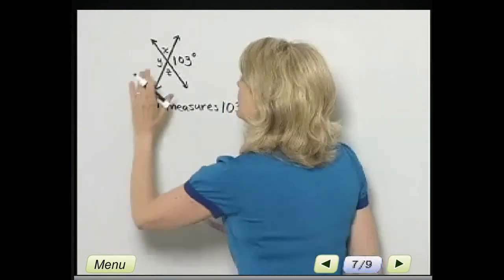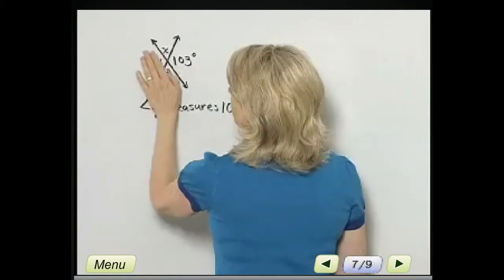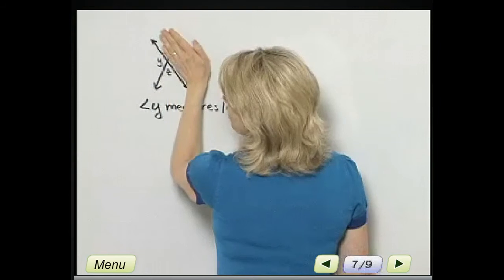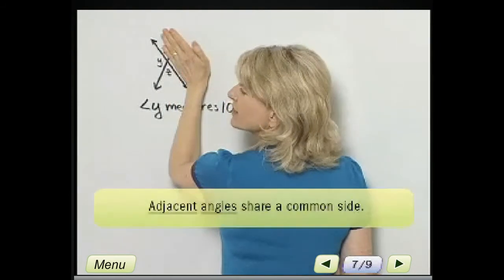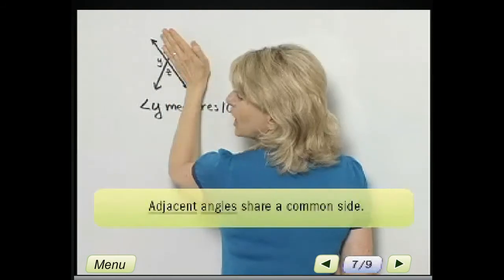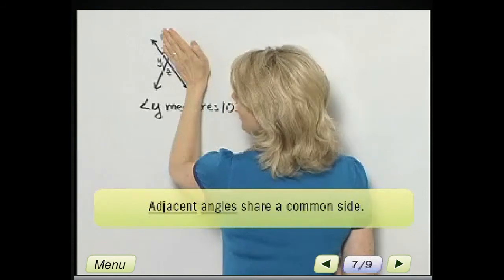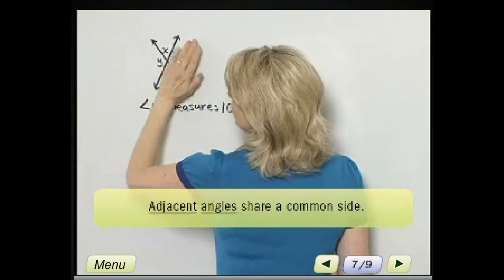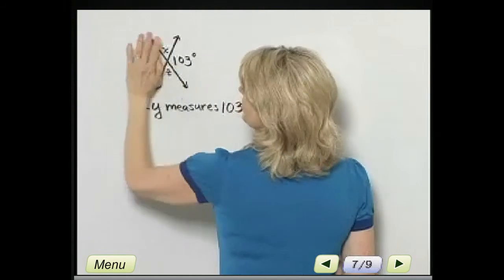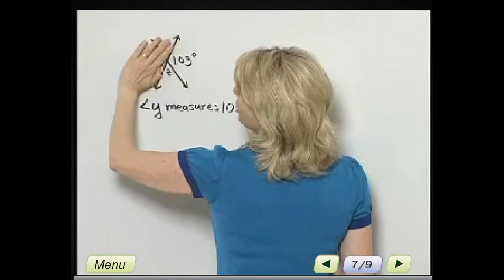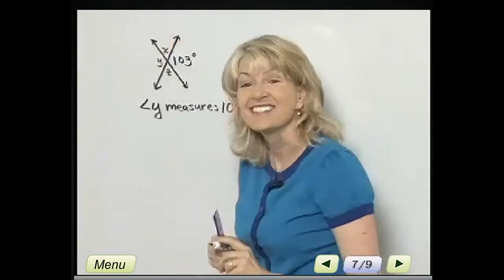Now, X and Z measure the same, but how do you think we can find either one? Well, notice that, let's just look at Y and Z for a moment. Y and Z are what we call adjacent angles. They share a common side, by the way. So Y and Z are adjacent, X and Y are adjacent, X and 103 degrees, those are adjacent, and Z and 103 degrees, those are adjacent angles.